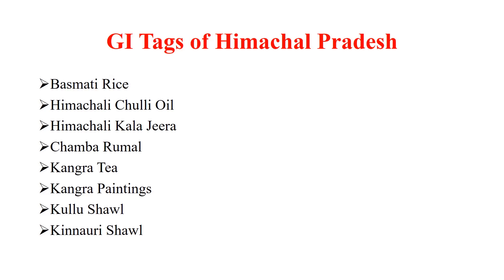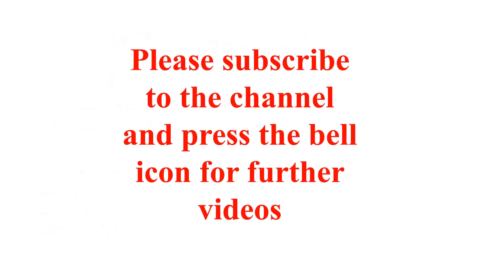Chuli is dry apricot. Rumal means handkerchief. Chamba is a district in Himachal Pradesh. Kangra is also a district in Himachal Pradesh. Kulu is also a district in Himachal Pradesh. Thank you.